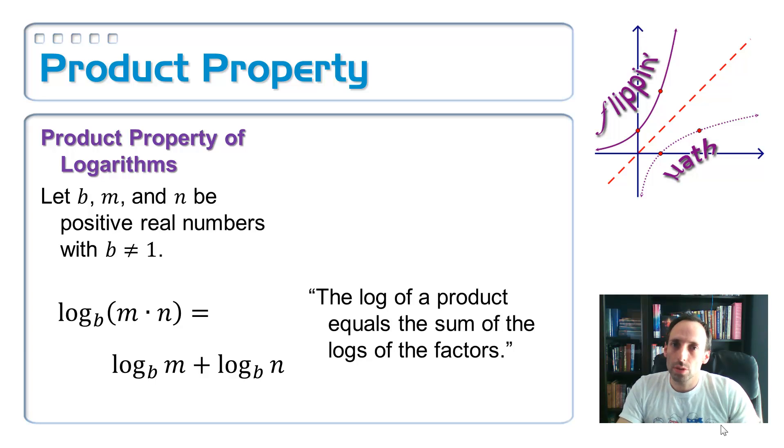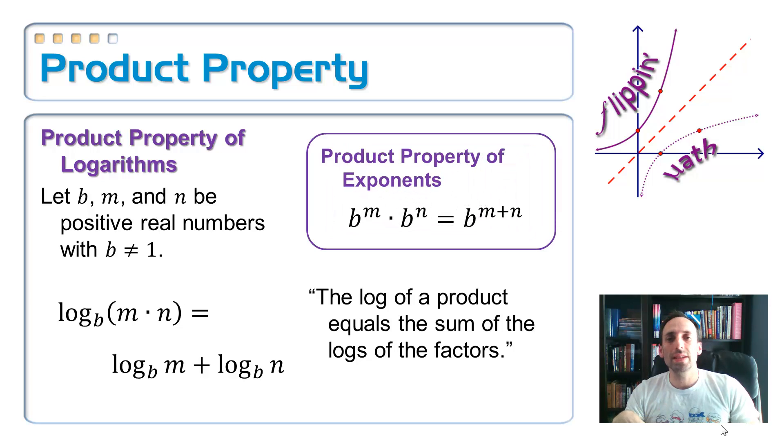Now, why is this? The reason why it is is because logarithms are exponents. And whenever you multiply with like bases, what are you supposed to do to those exponents? You're supposed to add them. This is based on the product property of exponents. B to the M times B to the N is equal to B to the M plus N.